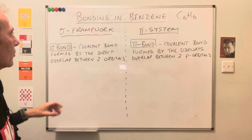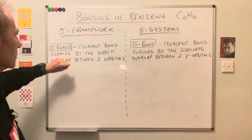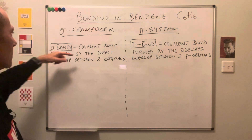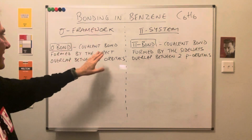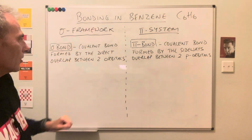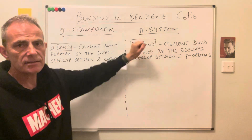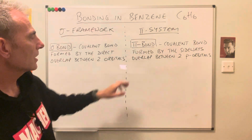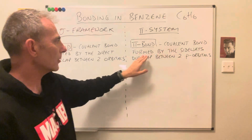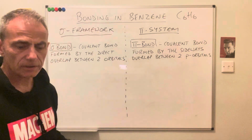We've got what's called a sigma framework involved in the structure. A sigma bond is a covalent bond formed by the direct overlap between two orbitals. We've also got something called a pi system in a benzene ring. A pi bond is a covalent bond formed by the sideways overlap between two p orbitals.